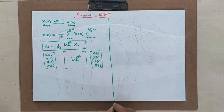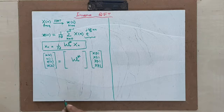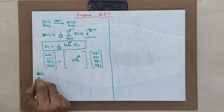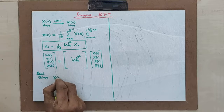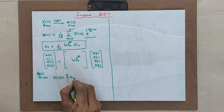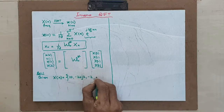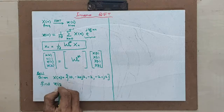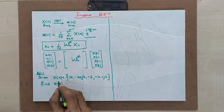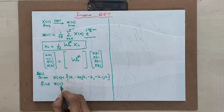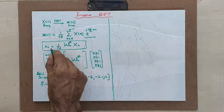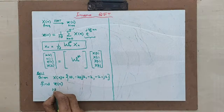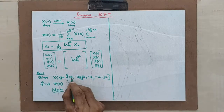Let us solve one example so that the formula I have given will be clear. Given x of k equal to {10, minus 2 plus j2, minus 2, minus 2 minus j2}, find x of n. You are given the frequency domain signal x of k and you have to find x of n, the time domain signal. This is a 4-point DFT, so let N equal to 4.